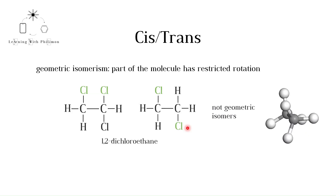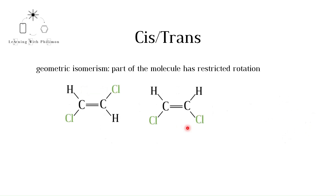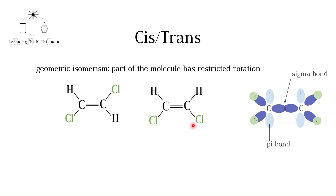Now let's take a look at an alkene, 1,2-dichloroethene. There are two possible combinations: the chlorines can be on opposite sides of the double bond, or on the same side. The difference here is that there is no free rotation around the carbon-carbon double bond.